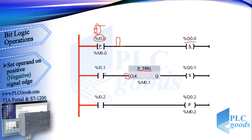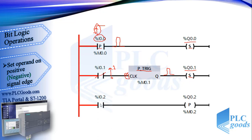When I 0.1 changes to close, the RLO changes from 0 to 1 at this input, so this block generates a pulse which sets Q 0.1 to 1. In the last line, when I 0.2 changes to close, this instruction sets its output to 1 for just one program cycle.